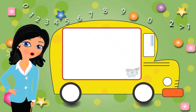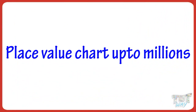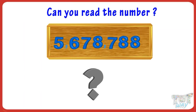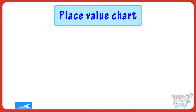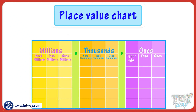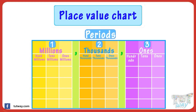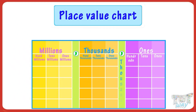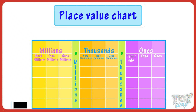Hi kids, today we will learn the place value chart up to millions. So let's get started. Can you read the number? It's difficult right now, so let's learn the place value chart so that we are able to read bigger numbers. Our numbers are divided into three digit groups called periods. Each period is separated by a comma, and each comma has its own name: thousands, millions. If you can read a three digit number and you know the comma names, you can read any number.